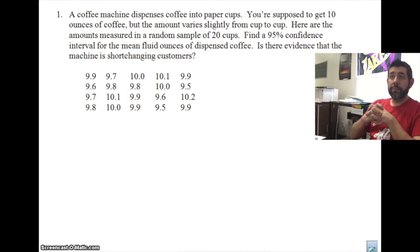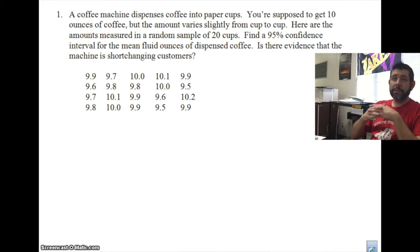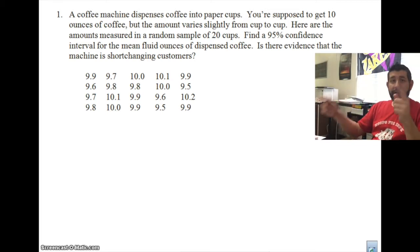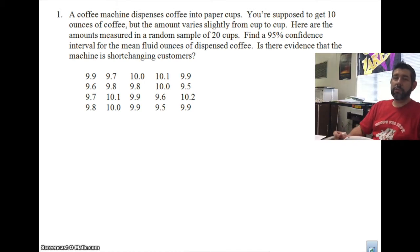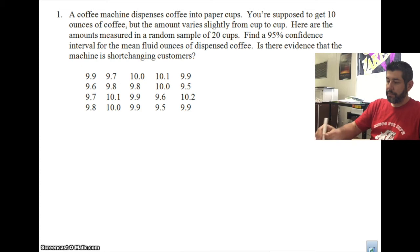Here's the problem we're going to be doing. A coffee machine dispenses coffee into paper cups. You're supposed to get 10 ounces of coffee but the amount varies slightly from cup to cup. Here are the amounts measured in a random sample of 20 cups. Is there evidence that the machine is short-changing customers — meaning they are getting less coffee than they're supposed to?